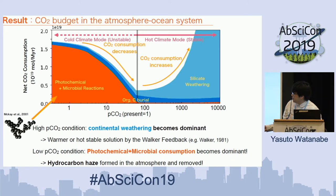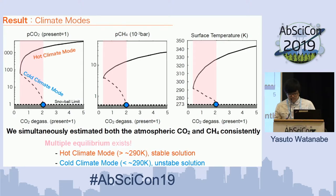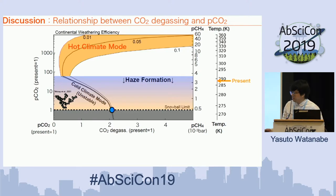As a result, under low CO2 conditions, CO2 is consumed in the coupled system of photochemistry and marine microbial reactions. This creates a characteristic valley shape in CO2 consumption. If you switch the axis again, you get the characteristic shapes of multiple equilibria.